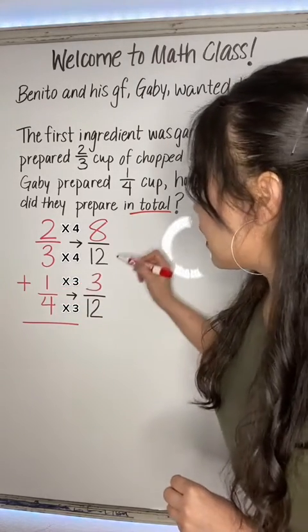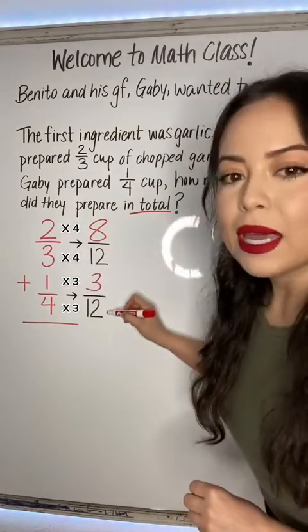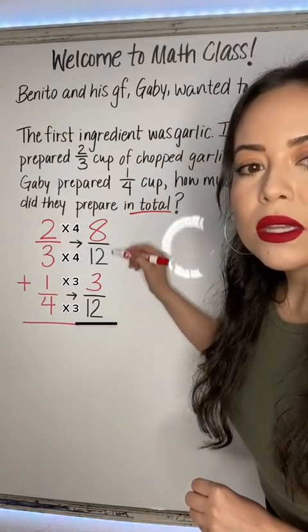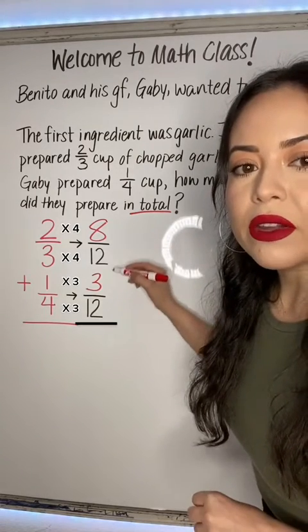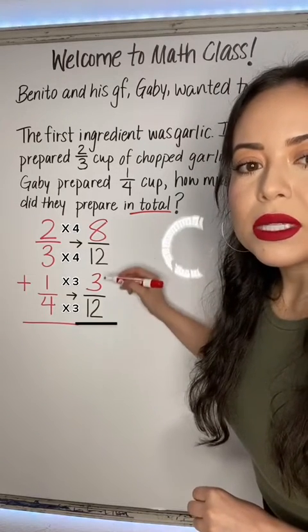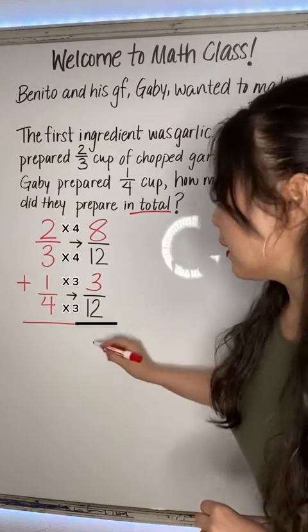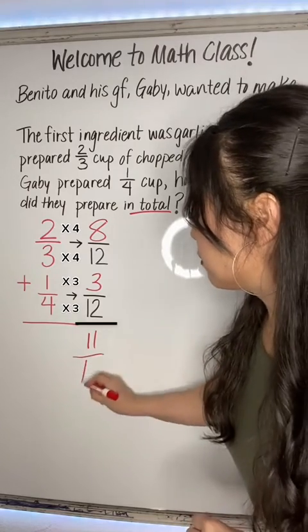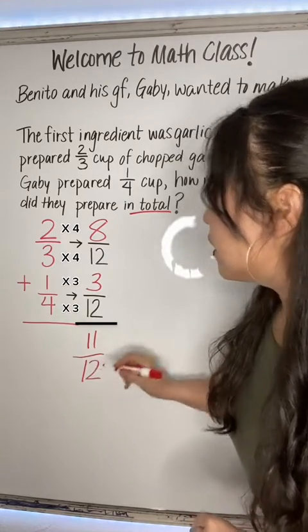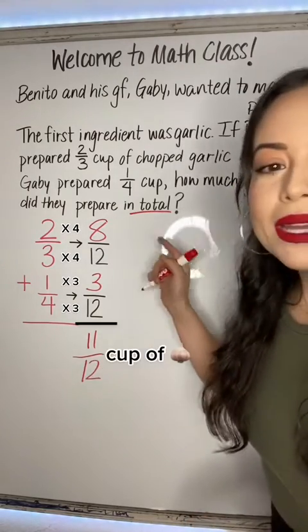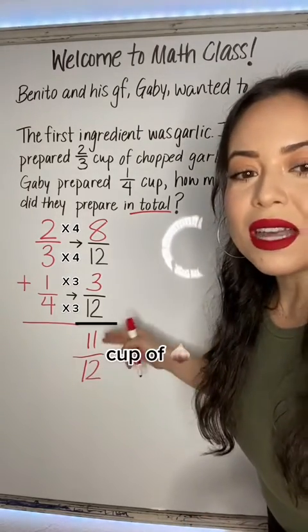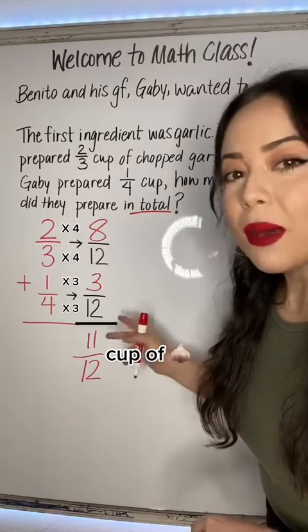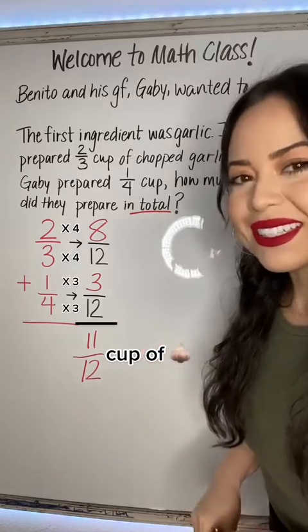And now that they're the same, we can add the numerators together. Eight plus three is 11, and then you copy the denominator, 12. So Benito and Gabby prepared 11/12 cup of garlic.